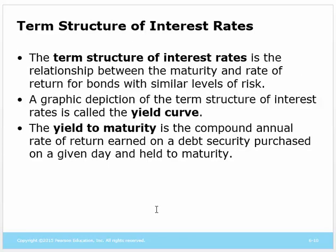How can we understand what's going on with interest rates in the economy? The term structure of interest rates is a table that shows the maturity of a set of bonds compared to the rate of return for those bonds on a certain day — it reflects maturity and returns for similar types of investments. The yield curve is just a graphic depiction of the term structure. One other term to introduce is yield to maturity: if you buy a bond, get all the cash flows you're supposed to get, and hold it to maturity, this is the rate of return you earn on the money you invested.